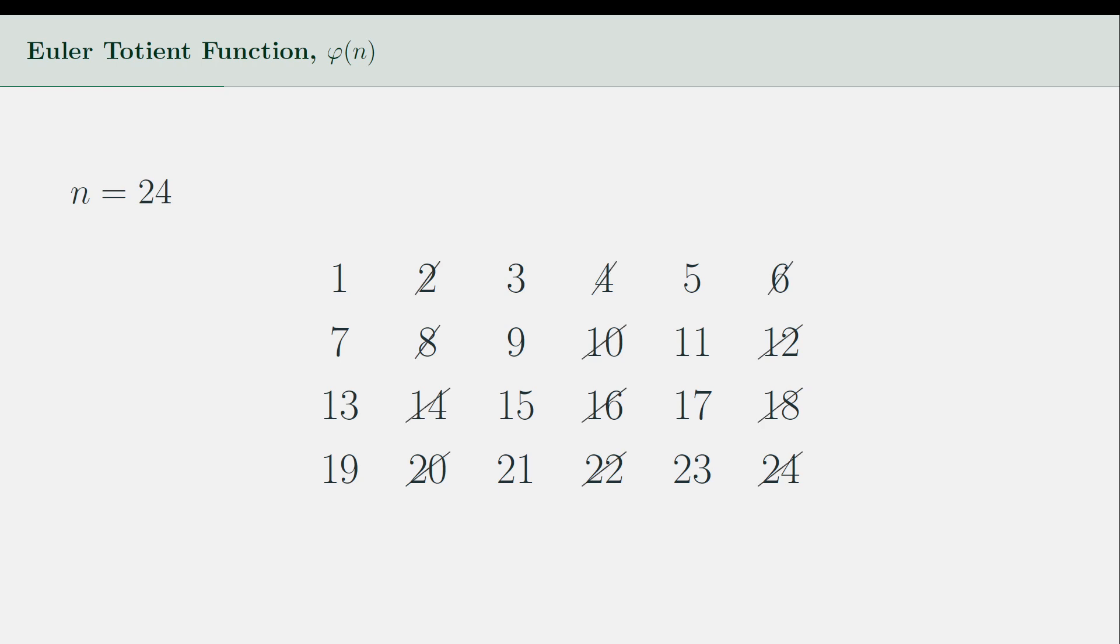We cancel out all multiples of 2, then all multiples of 3. This leaves us with 8 numbers which are not divisible by 2 or 3, implying that they are relatively prime to 24. Hence, the totient of 24 is 8.